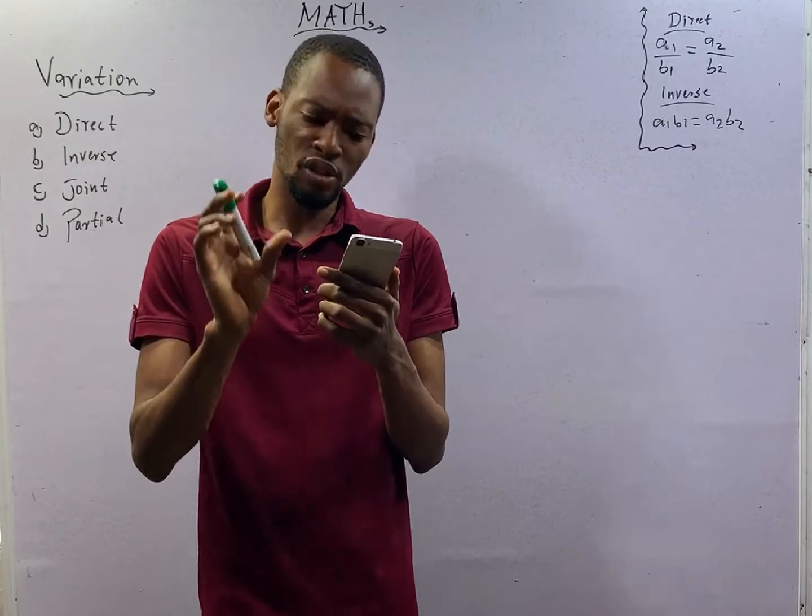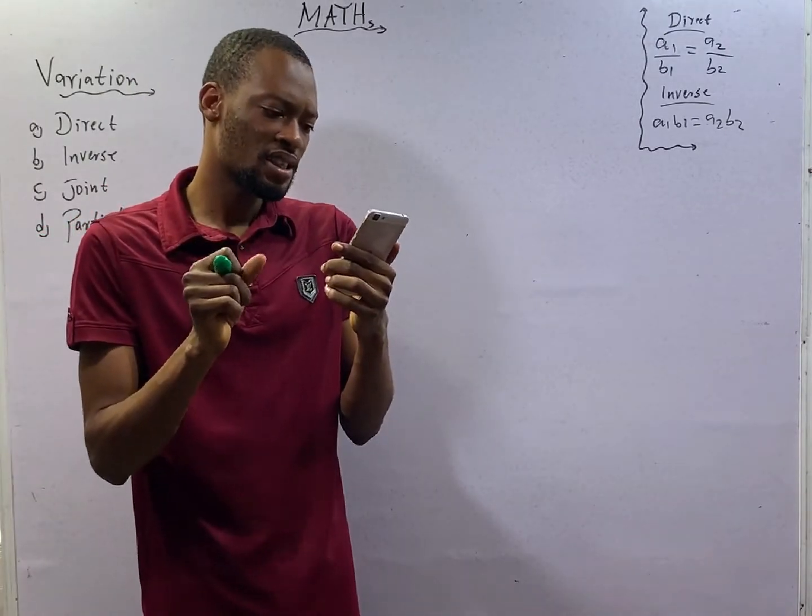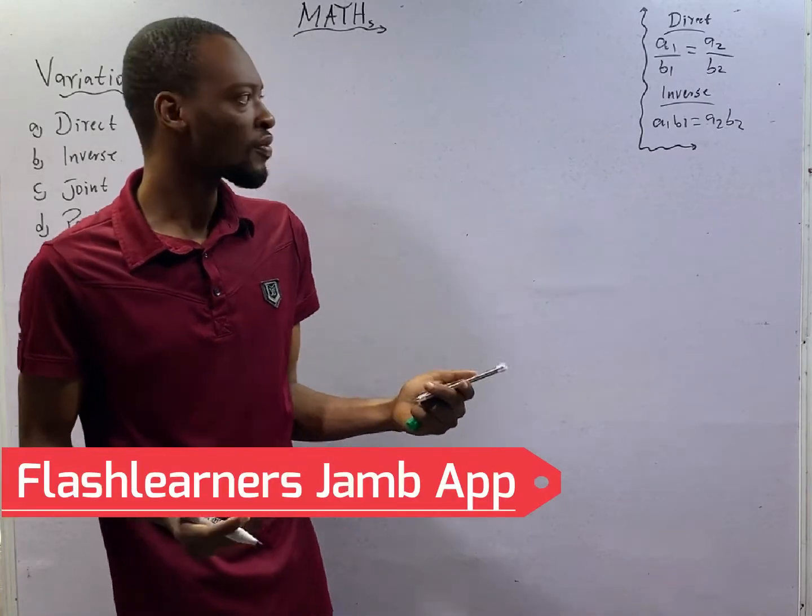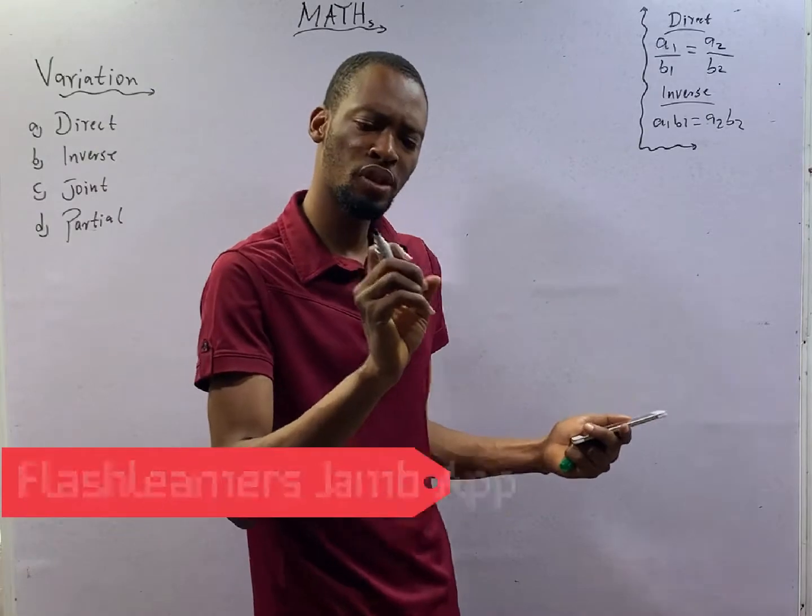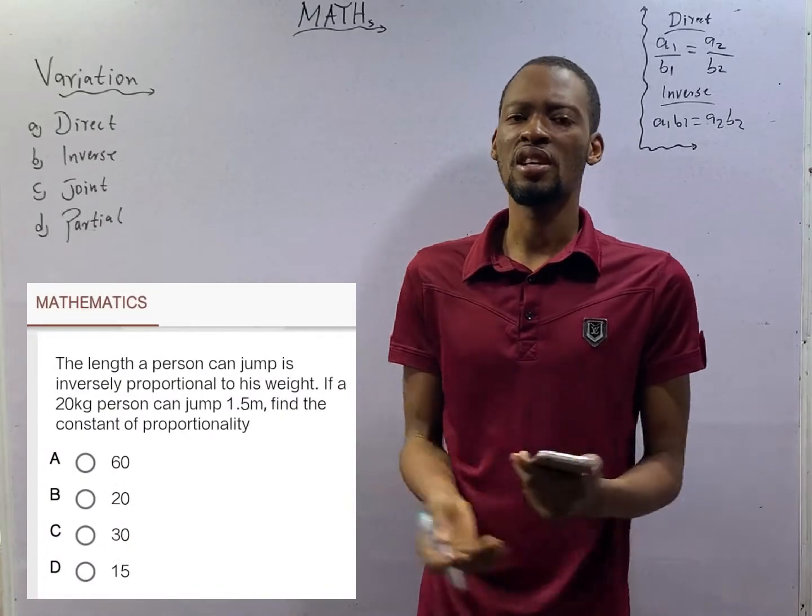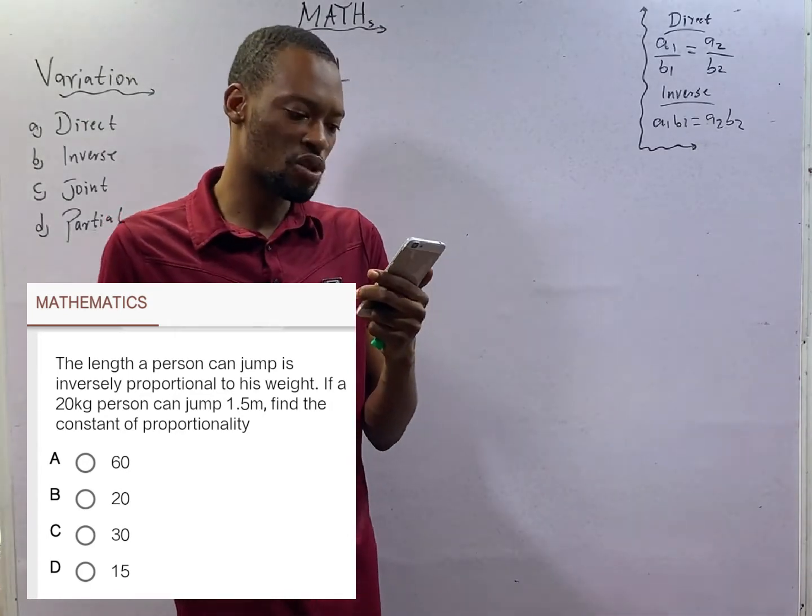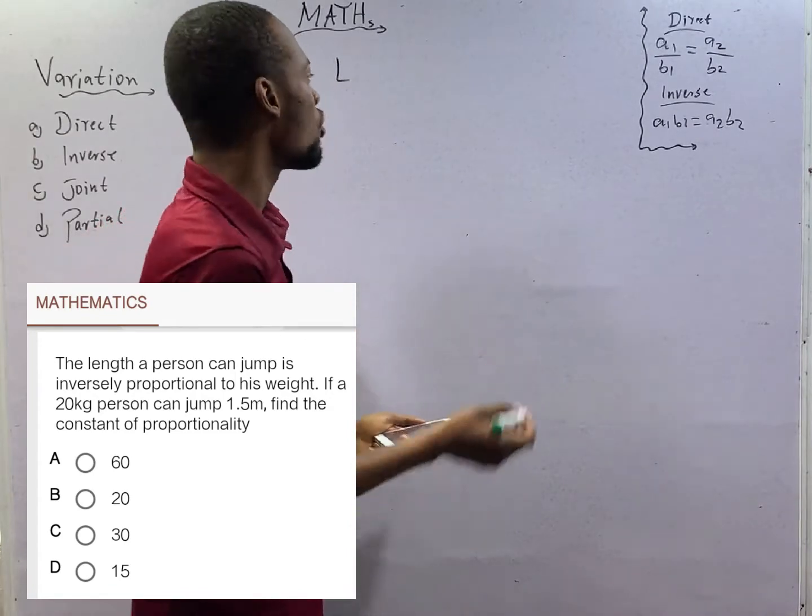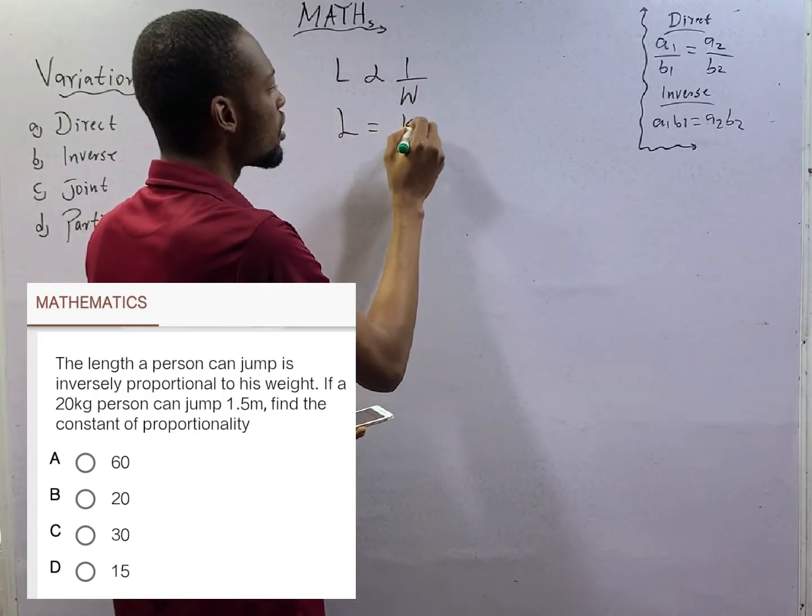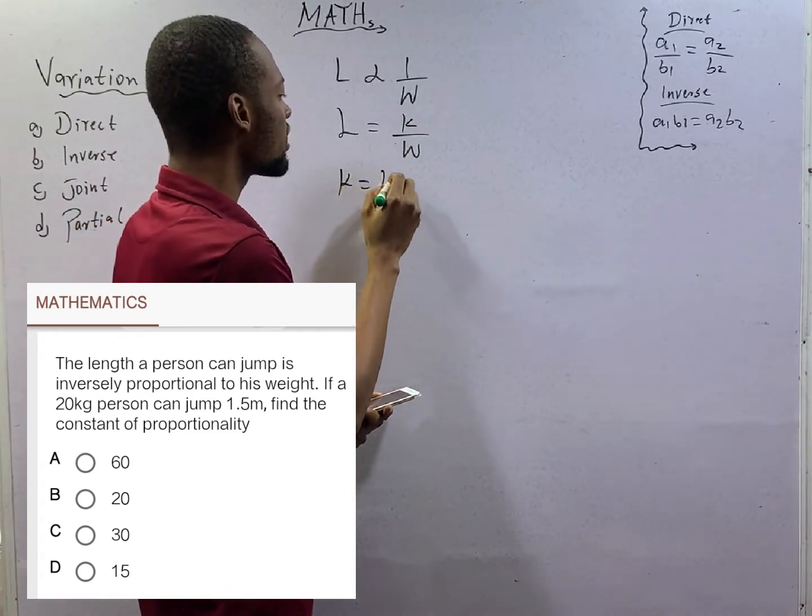The length a person can jump is inversely proportional to his weight. If a 20 kg person can jump 1.5 meters, find the constant of proportionality. In variation, we don't solve with proportionality sign. We always convert to equality and a constant will be introduced. Length is inversely proportional to weight, which means L is proportional to 1 over W. As such, L equals K over W, so constant equals length times width.